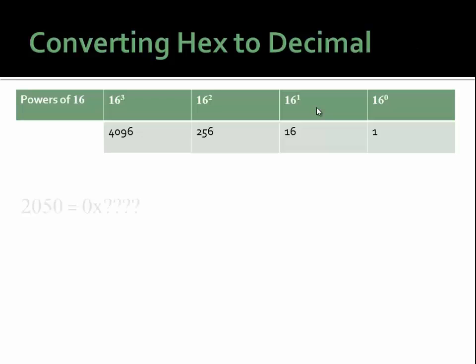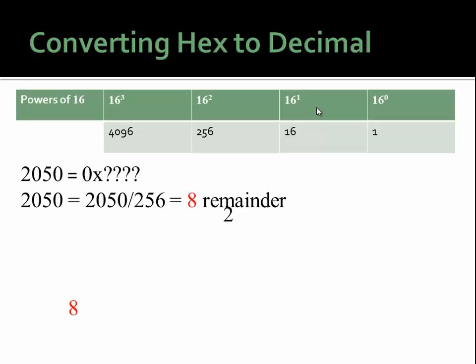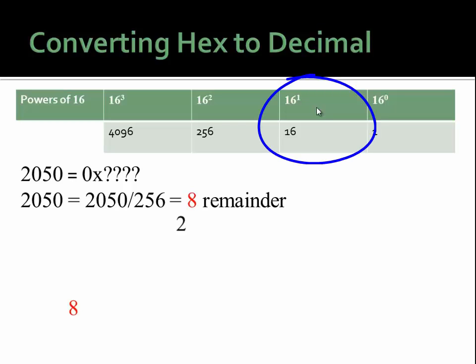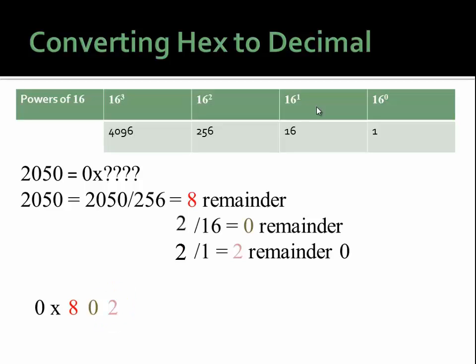Let's do some examples. Take the number 2050 and figure out what that is in hex. The highest power of 16 that goes into 2050 is 16 squared, or 256, which is the third place. It goes into that number eight times with a remainder of two. So write down the eight for the third place and bring down the two. Now we have to figure out what power of 16 goes into two. 16 to the first, or the sixteens place, doesn't go into it at all, so we put a zero there. The remaining two goes into the ones place — one goes into two twice, so write down two. Prepend the 0x to denote that it's hexadecimal: 0x802.